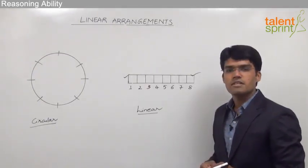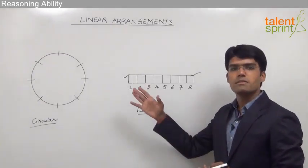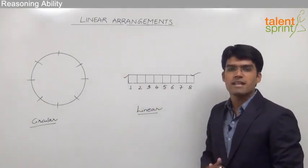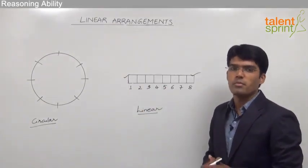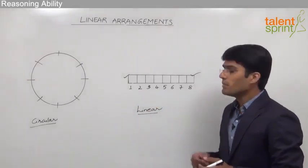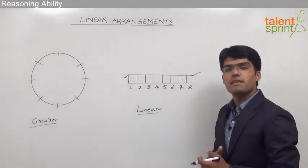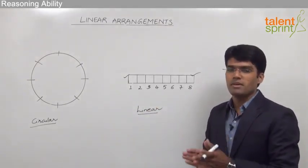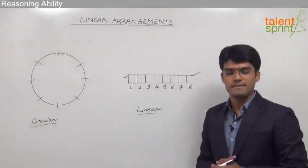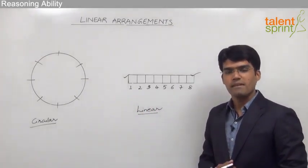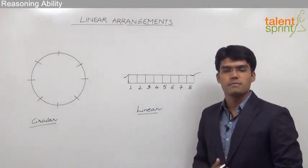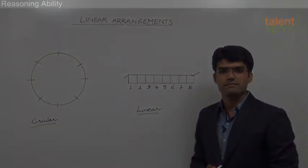In a circular arrangement the person can be placed on any of the positions as there is no definite starting or ending point. So the key point to remember in case of linear arrangements is that we can place a person only when we know his position from either of the ends. Let us now take an example of a simple linear arrangement.